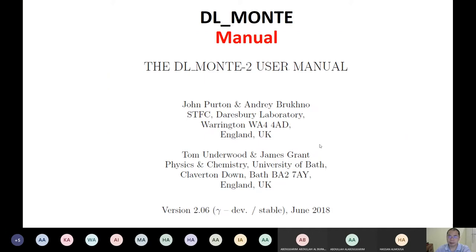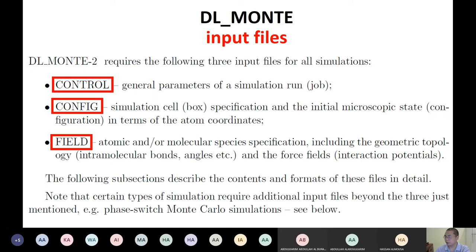Another is the manual — please keep that in mind. I just copied it here so I know how the manual looks. Also, a very rough introduction about DL_Monte: once you install the program, you need the inputs — like a machine, they need the input to make products. We need three input files: one called control, one called config, one is field.